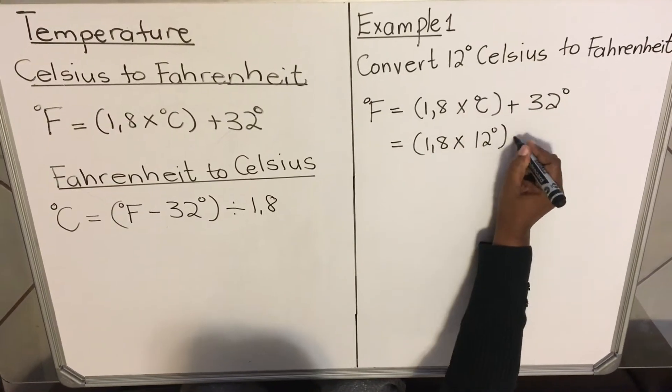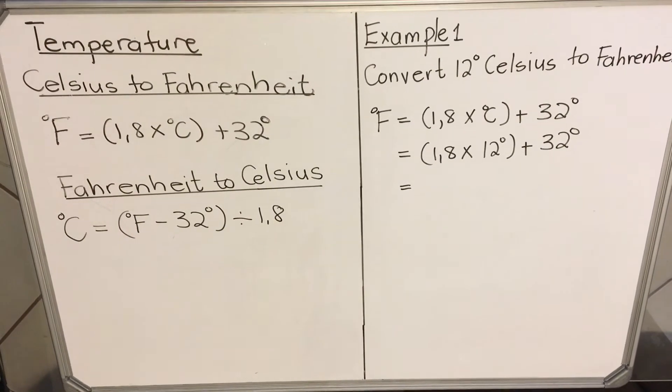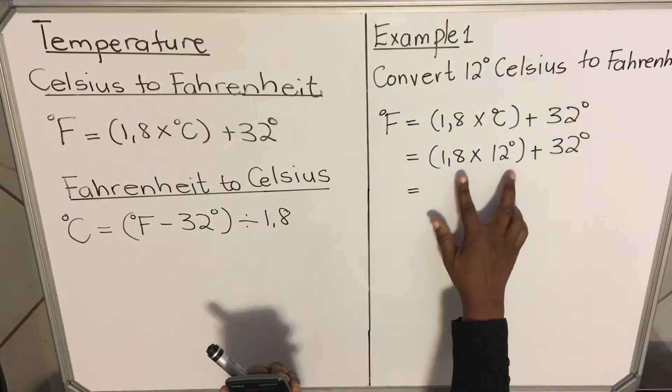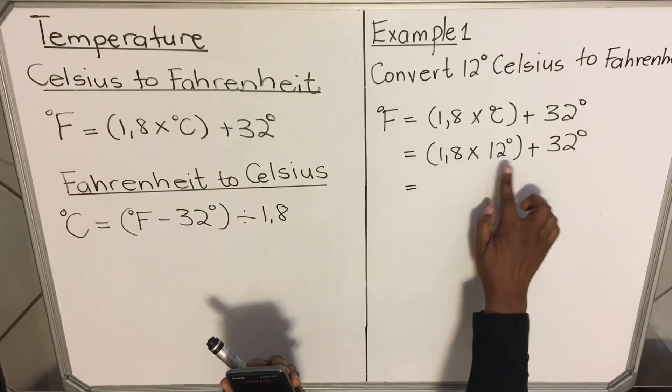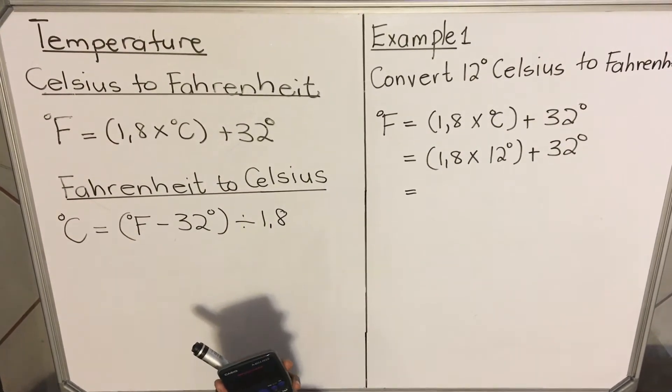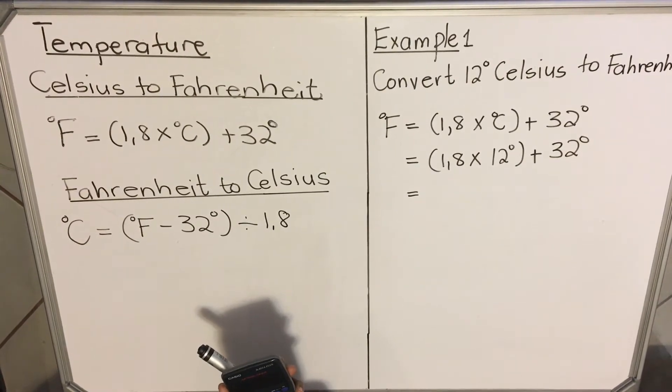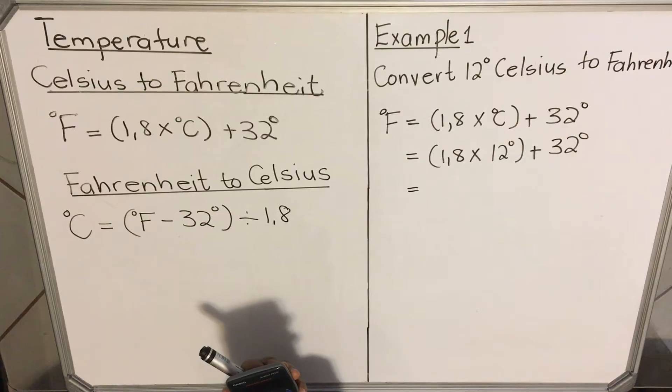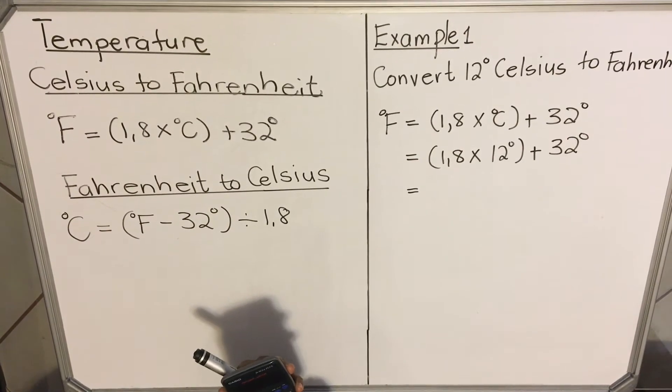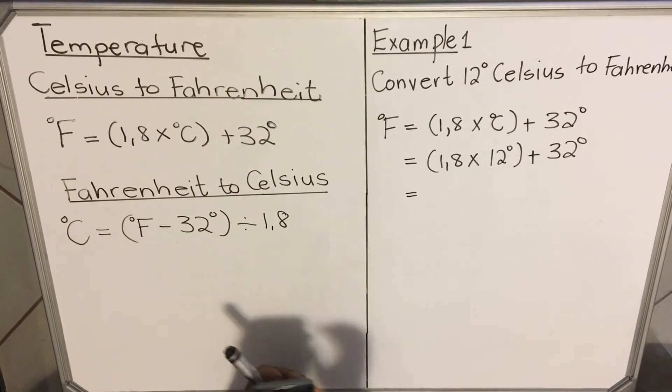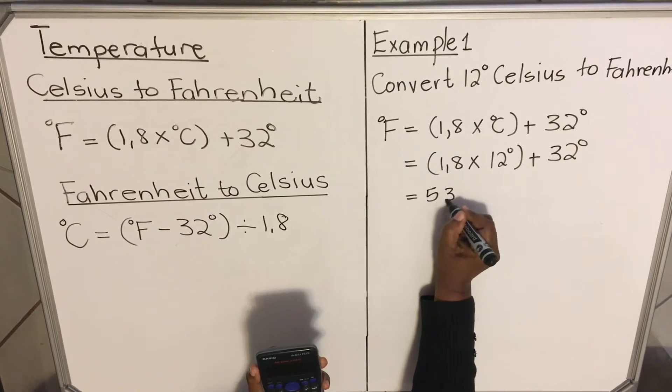Then you take your calculator and punch it in. You see the bracket here? It tells you that you must multiply first before you add. So you're going to say open bracket 1.8 times 12, then do your equal sign, then add 32 degrees. Then your answer is 53.6 Fahrenheit.